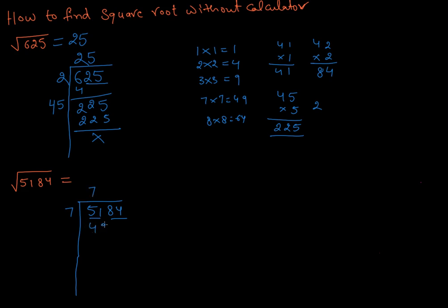Going to do subtraction. 11 minus 9 is 2. So just 2. Now we're going to bring the pair down: 284. And here, 7, remember plus 2. We make a double, becomes 47. The double of 7 is 14.